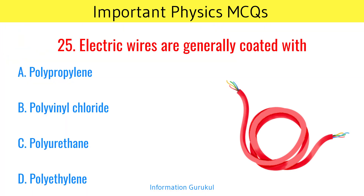Electric wires are generally coated with polyvinyl chloride.